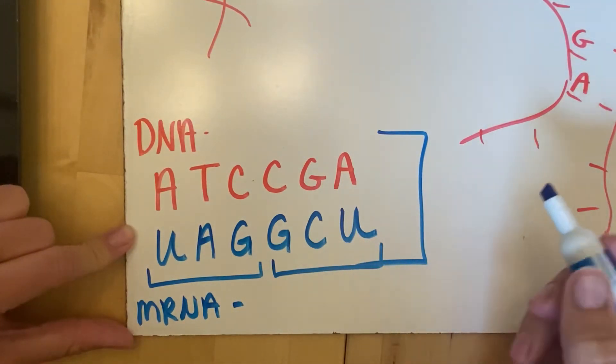This is the process of transcription. So now we have two codons, UAG and GCU, on our mRNA. That mRNA is then going to leave the nucleus and take us to our next stage.